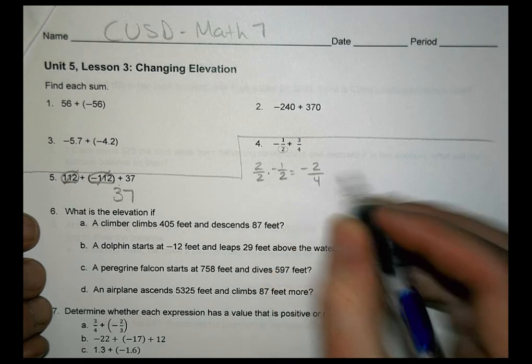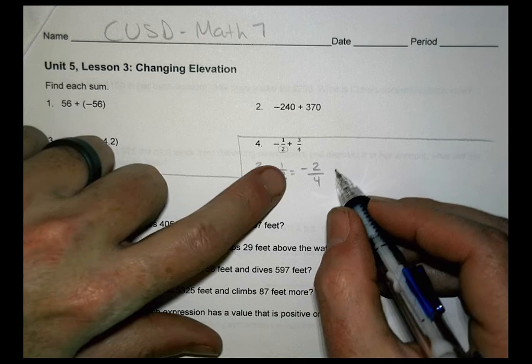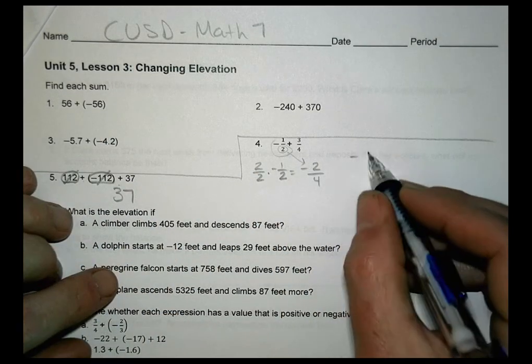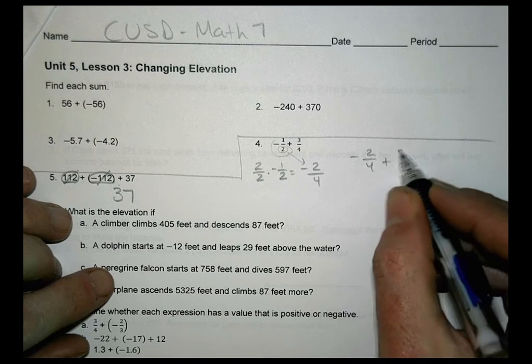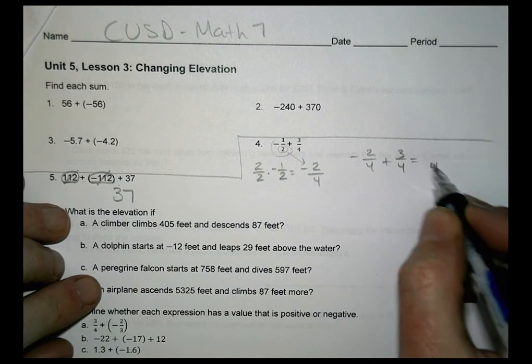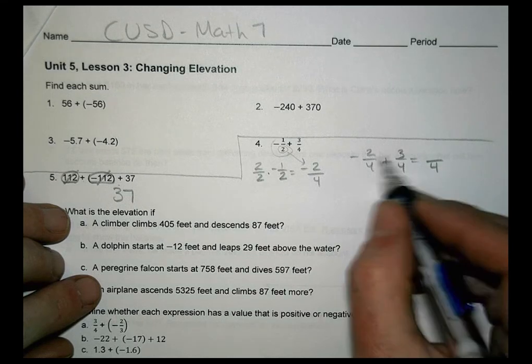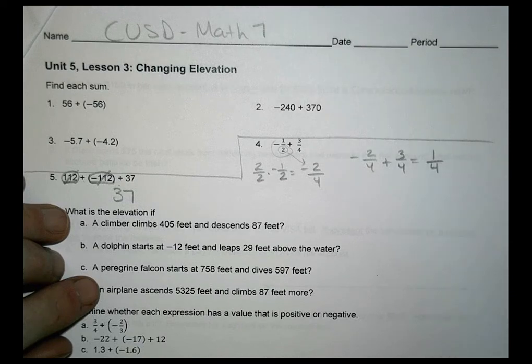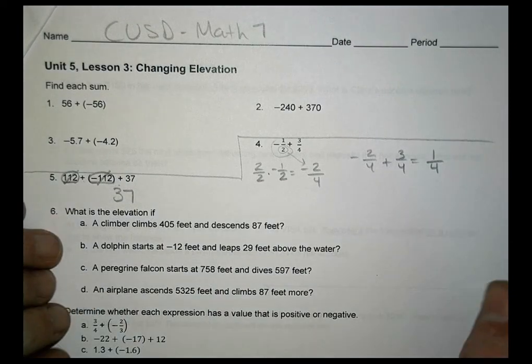And then we're going to add that. We can use negative 2 over 4 and add it to 3 fourths there. So the denominator is going to stay the same, and we have a positive 3 and a negative 2. So 3 minus 2 is 1, and we end up with 1 fourth as a solution.